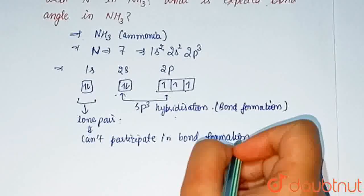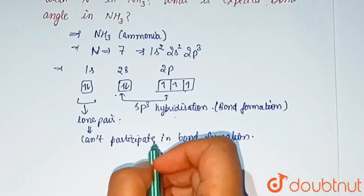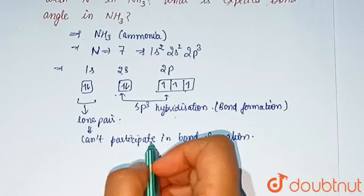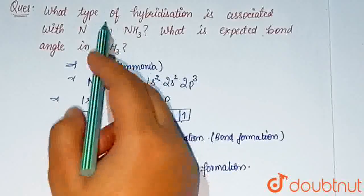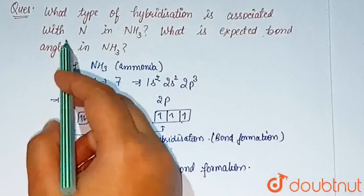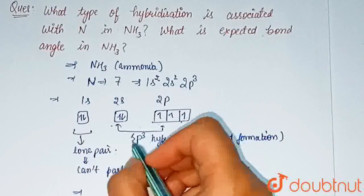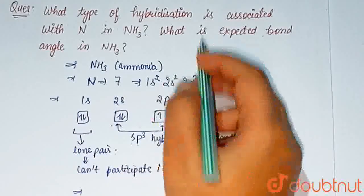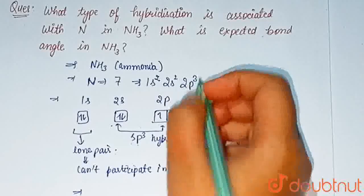The 4th sp3 hybrid orbital will obviously be directed towards the corners of tetrahedron. So the type of hybridization associated with NH3 is sp3 hybridization.